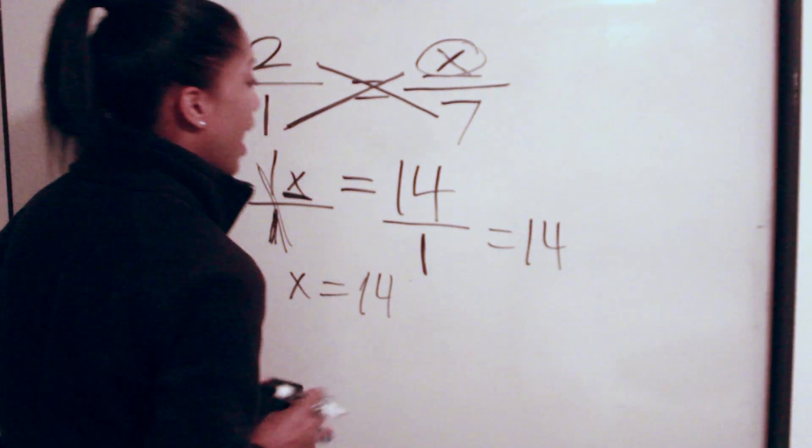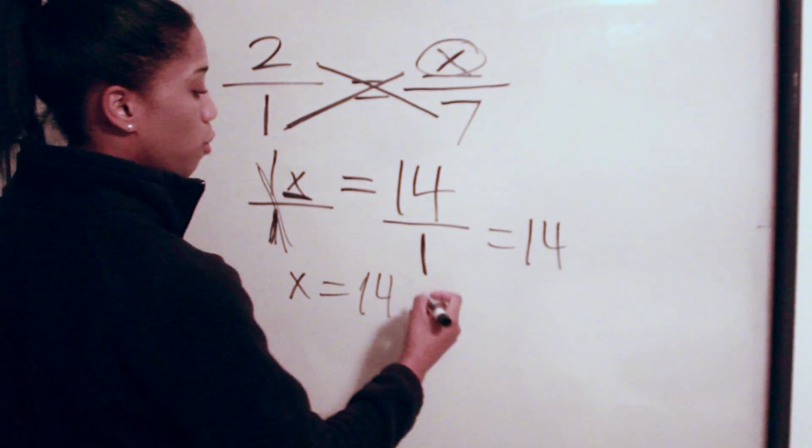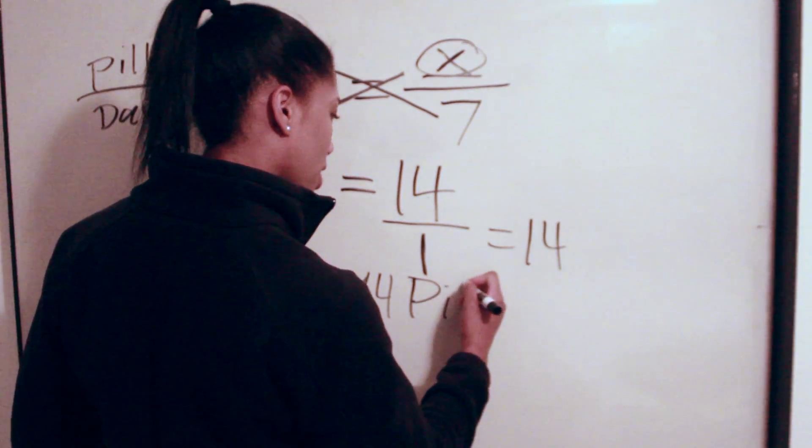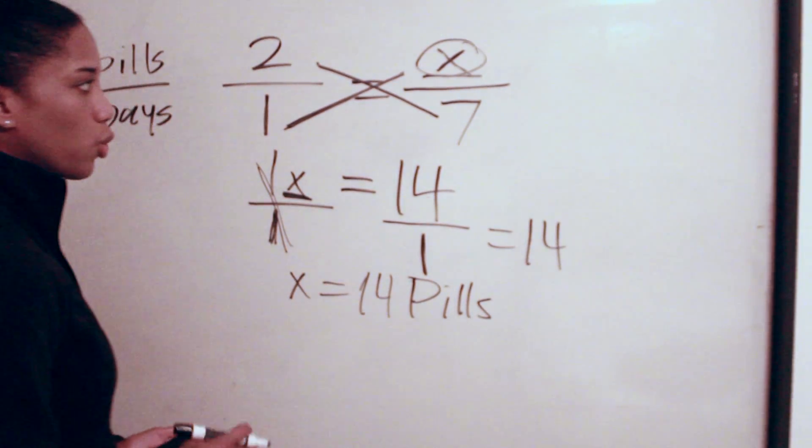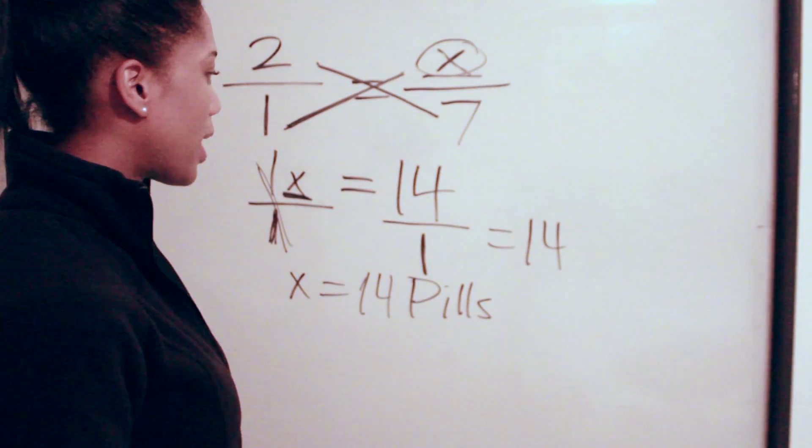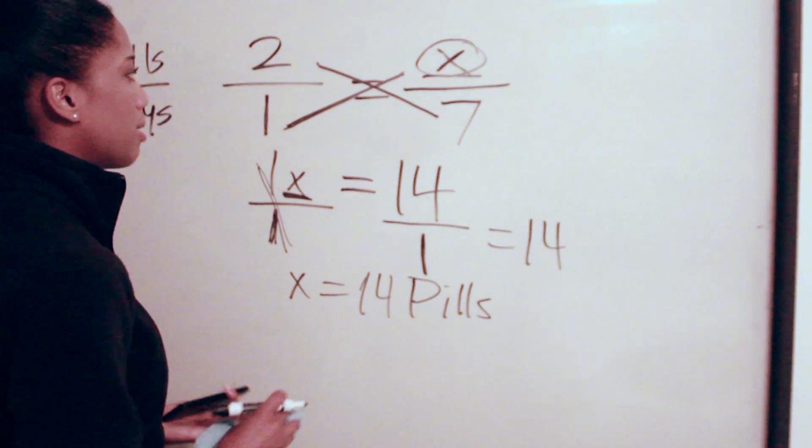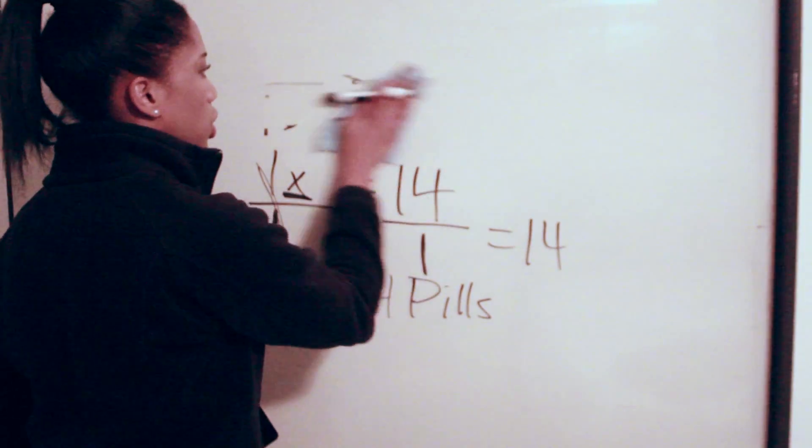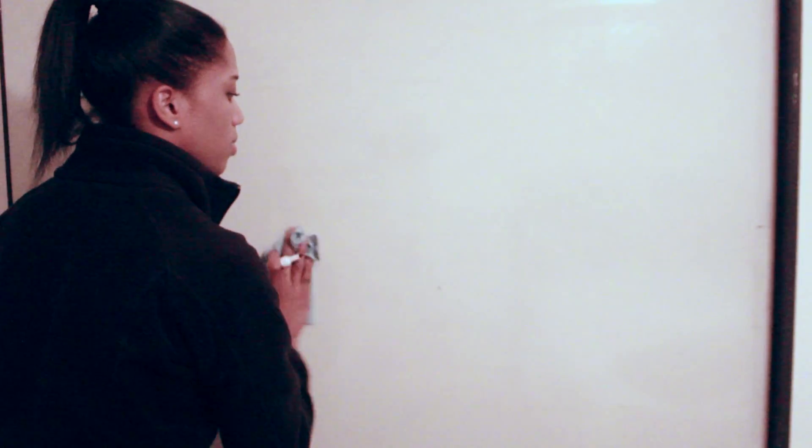So ultimately, X equals 14 pills. We know that the dose for this patient—in total, for a seven-day supply—they need 14 pills to be administered.